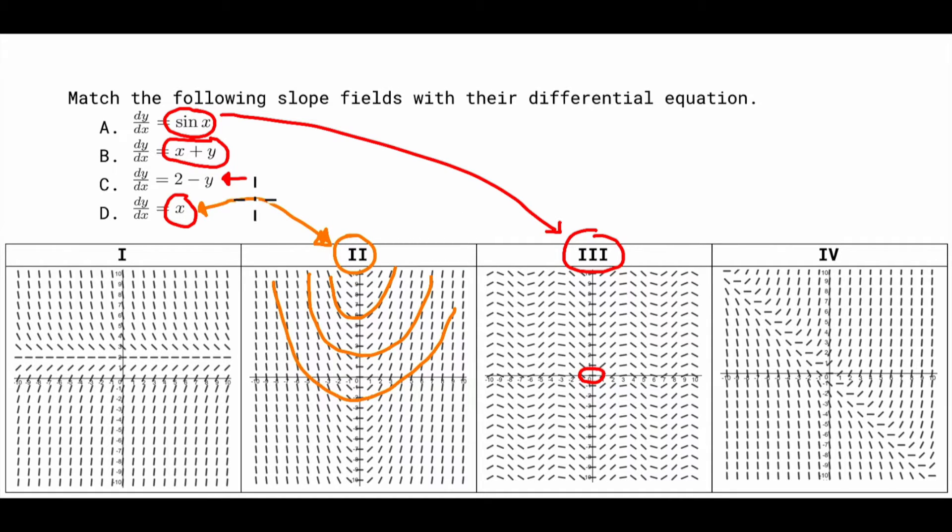All right C it says 2 minus y. So we're looking for one that's only affected by the y. The x doesn't change. So as you go left to right it should not change. If you notice with one it's left to right it's not changing. This one over here left to right it is changing. So the only one that could work for C would be Roman numeral I. So these match right here.